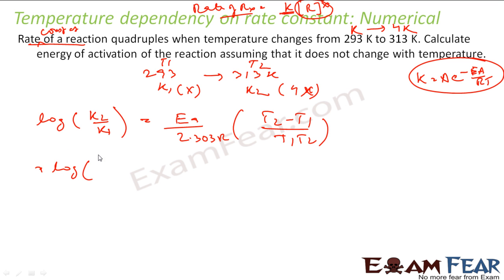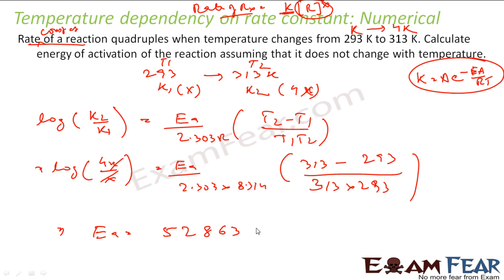Put the values here. Log of K2, which is 4X by K1, which is X, equals EA by 2.303 times 8.314 times 313 minus 293 by 313 times 293. This becomes log 4. So you solve this. EA comes out to be 52863 Joules per mole, and that is my answer.